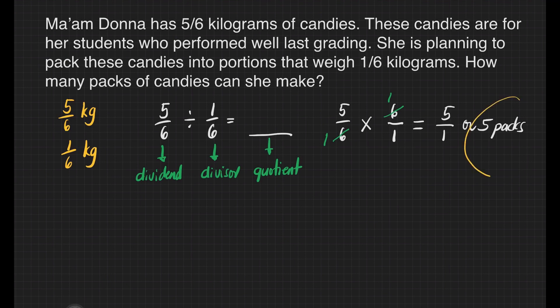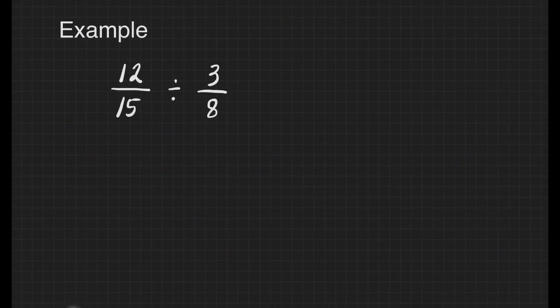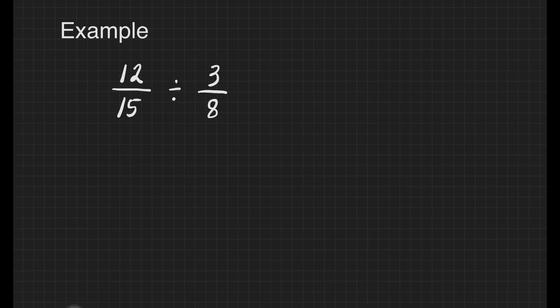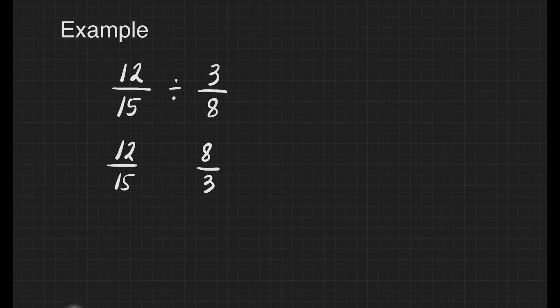And that's it. We have another example here. 12/15 divided by 3/8. First step is to copy our dividend. Let's copy that, 12/15. Next, let's change 3/8, that is our divisor, to its reciprocal by interchanging the denominator and the numerator. It's going to be 8/3.